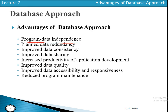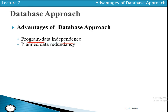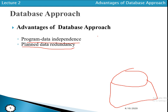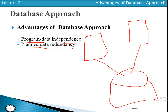The next advantage is planned data redundancy. Redundancy means data duplication. In the database approach, data is stored at a single centralized location. Different applications — library, examination, or any other — access the data from the centralized location. Different users can also access the data from the centralized location. Therefore there is no duplication of data. A single centralized database is used for all departments, so there is no need to store the same data at different locations.